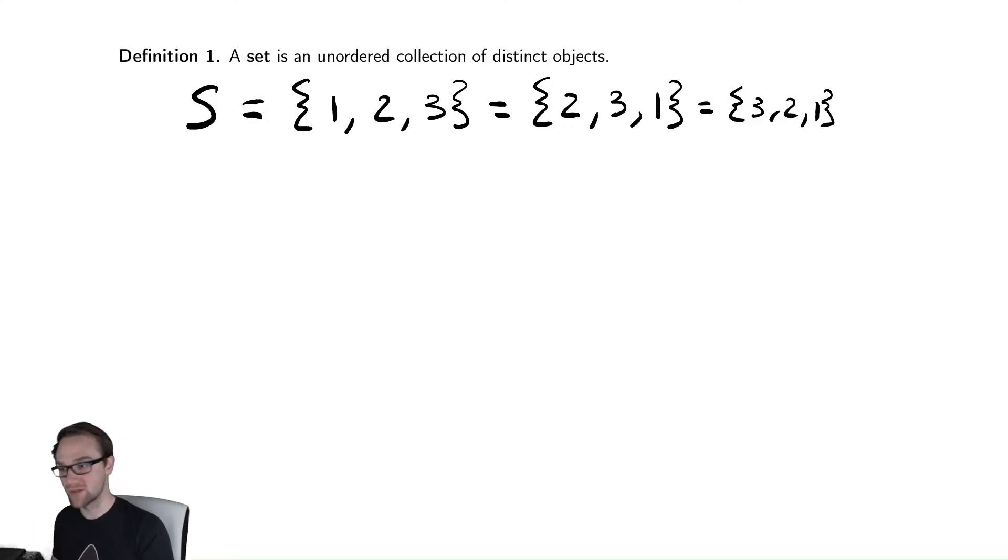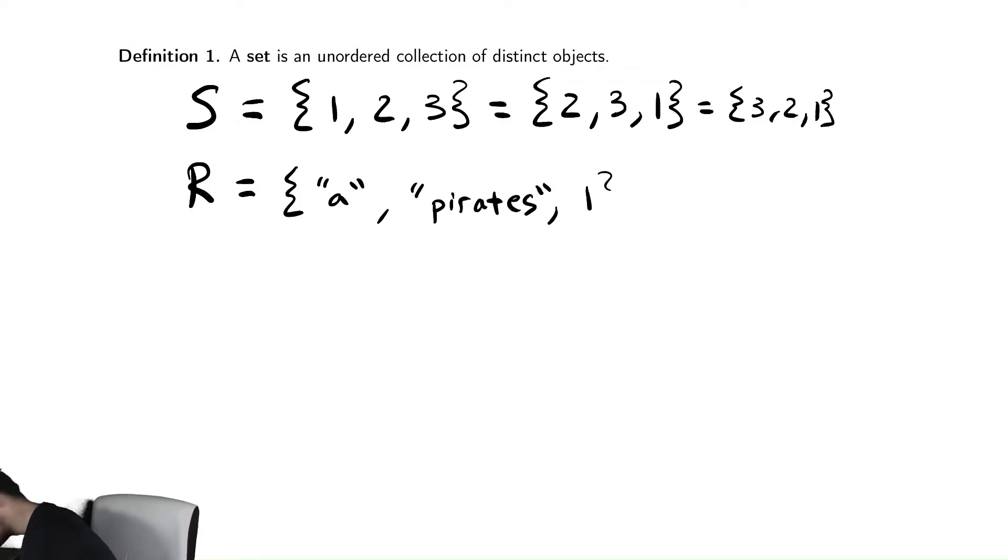This is one of our notations for sets. Let's look at some other examples. You could also have a set that contains characters or even strings and numbers. You could have a set that contains numbers, characters, and even other sets. Also completely valid. You can combine sets in a variety of ways.